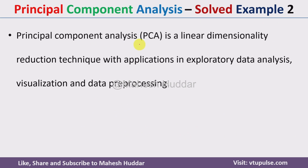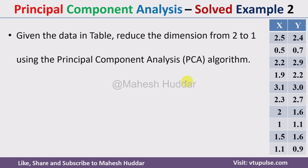Principal Component Analysis, that is PCA, is a linear dimensionality reduction technique with applications in exploratory data analysis and data pre-processing. In this case we have been given a dataset with two features, x and y, and there are 10 data points. We need to apply the PCA algorithm on this dataset and reduce the dimensionality from 2 to 1.